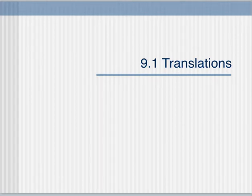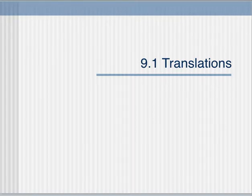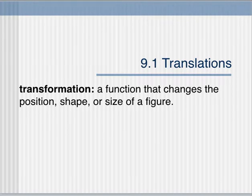So today we are beginning chapter 9, which is all about something called transformations. A transformation is really any change you make to the graph of a shape. So it can change its location or position, it can change its shape or its size.